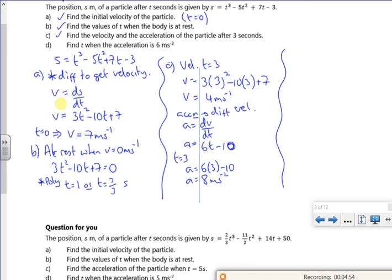As a last one, for part d, I want to find the acceleration, find the t when the acceleration is 6. So when my a is 6, I want to find t. So I'm saying that 6t - 10 is equal to 6. So 6t is 16, t is 8 over 3 seconds. There we go.